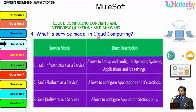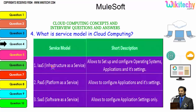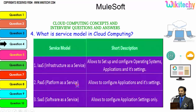The major service models in cloud computing are three. Infrastructure as a Service allows you to set up and configure the operating system, application, and its settings — you are given a server and can put whatever operating system you want. Platform as a Service provides you with a specified operating system and you can install any applications and settings. Software as a Service gives you a software and you can do whatever application settings you want.